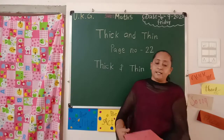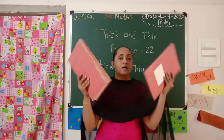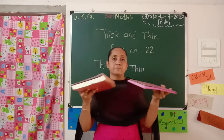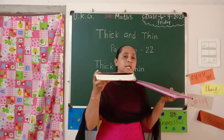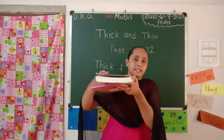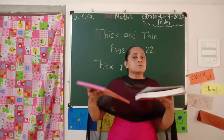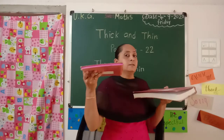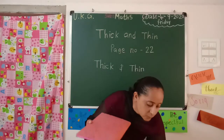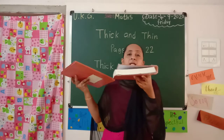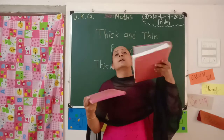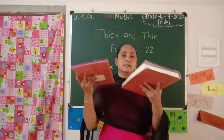Let's start the activity. I have two books. Which book is thick and which is thin? We have two books. Think — thick, thin. This big book is thick. Yani yeh moti — thick. Yeh patli — thin. Thick: T-H-I-C-K. Thin: T-H-I-N. Thick and thin.